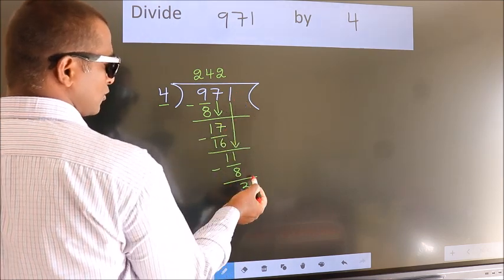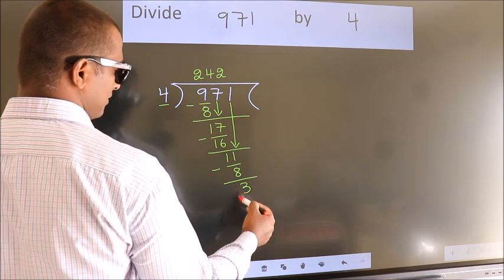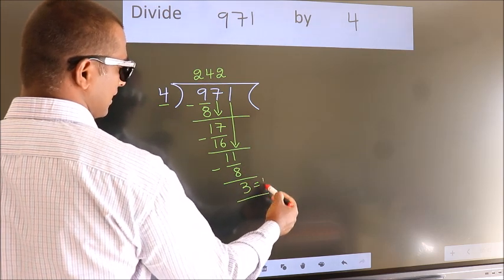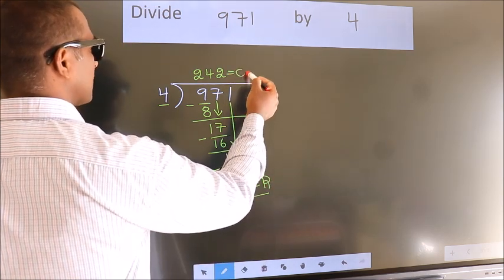No more numbers to bring it down. So, we stop here. This is our remainder. This is our quotient.